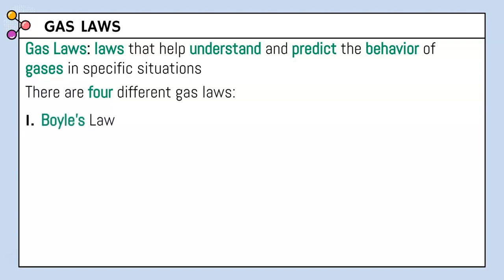Gas law number one is Boyle's Law, and Boyle's Law is P1V1 equals P2V2. P is pressure, V is volume. One indicates initial and two indicates final. With these gas laws we're comparing changes within the variables of a gas — so Boyle's Law compares pressure changes and volume changes.